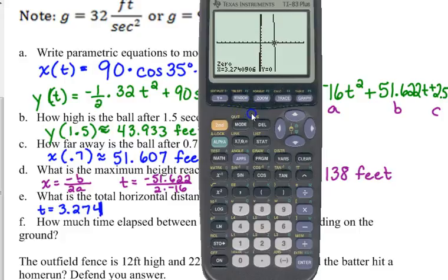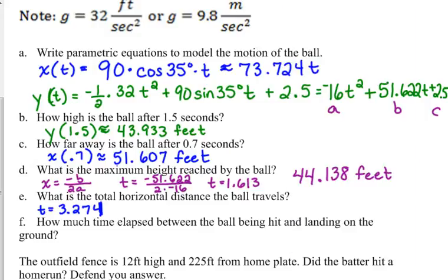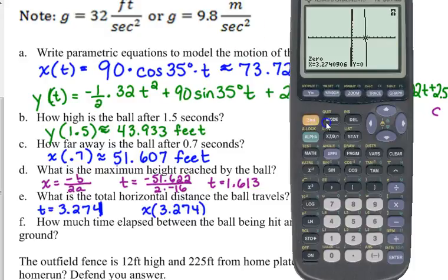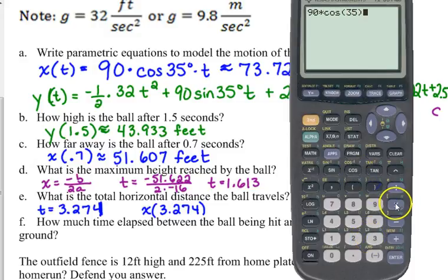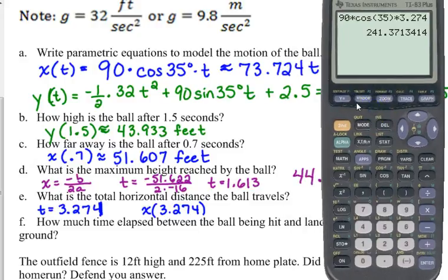It equals zero at 3.274. 3.274, the ball is on the ground. That's not what I wanted to know. I wanted to know what's the total horizontal distance that it travels, so I'm just going to plug that into the X. So 90 cosine of 35 times 3.274. So it travels approximately 241.371 feet.